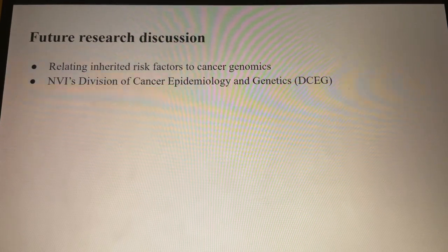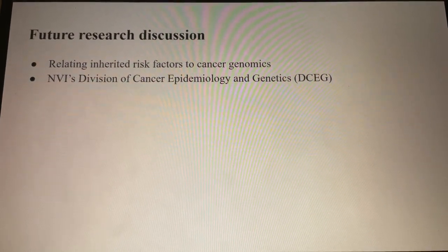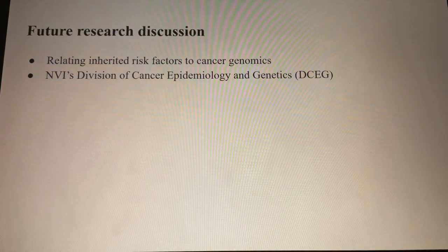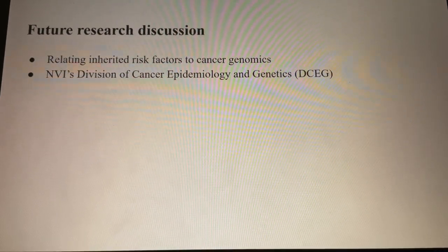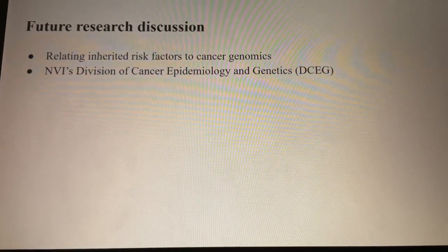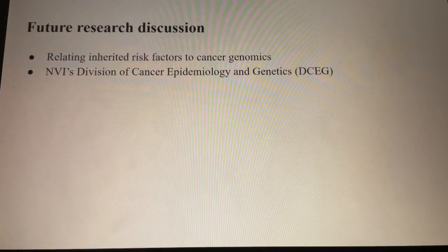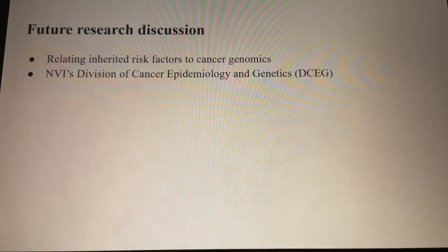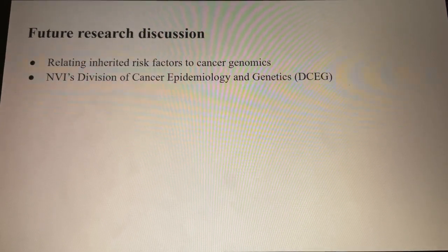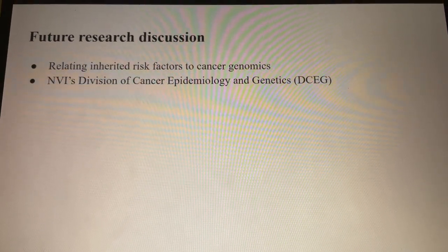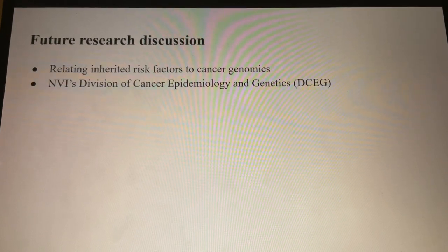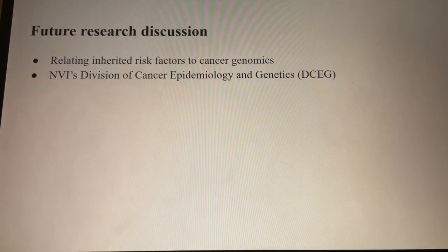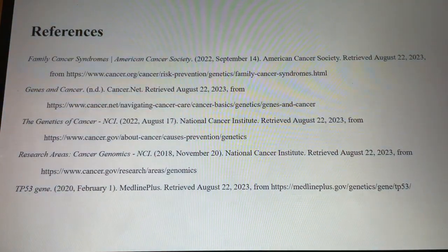Finally, the conclusion: Cancer is a genetic disease due to various gene mutations that control the growth and division of cells, including tumor suppressor genes and oncogenes. Current ongoing research by DCEG investigators focuses on innovative molecular and genomic patterns connected with inherited genetic variations and environmental influences. And here are my references. Thank you for listening.